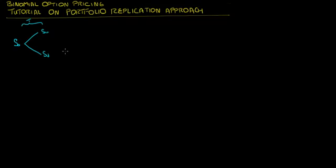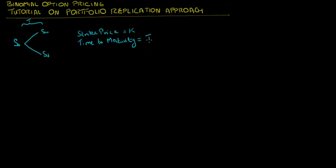Let's say there's an option on this stock with strike price equal to K and time to maturity of this option equals T. And let's say that the continuously compounded discount rate over this period is R%. Please note that the methodology described here applies equally well whether the rates are continuously compounded or discretely compounded.